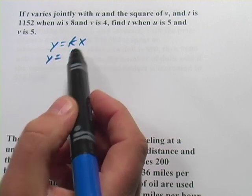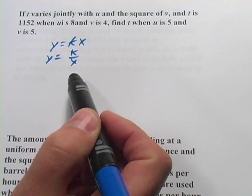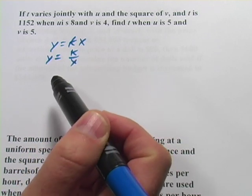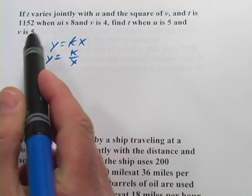We can also have y varying directly with one thing and inversely with another, and that's called combined variation. So we're going to do problems like that. Let's take a look at this first one.